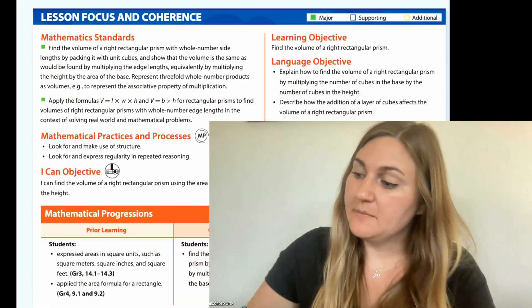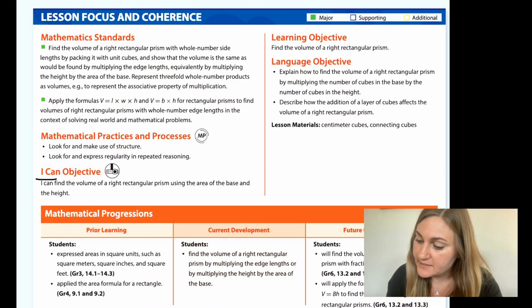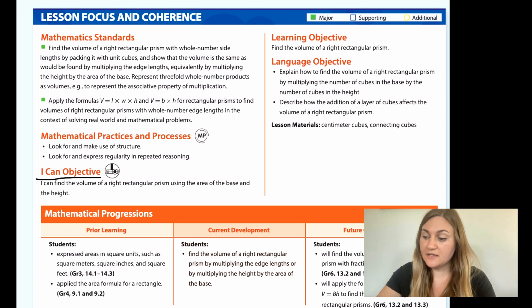Hi, I'm Natalie Rhodes and this is IntoMath's 5th grade, module 5, lesson 4. I'm going to start off by going over the I can objective. It says I can find the volume of a right rectangular prism using the area of the base and the height.